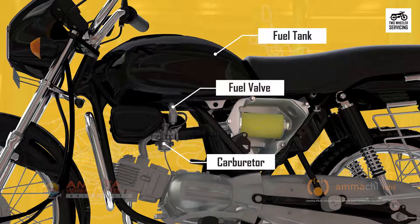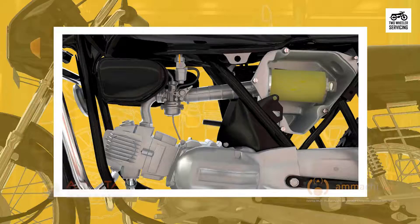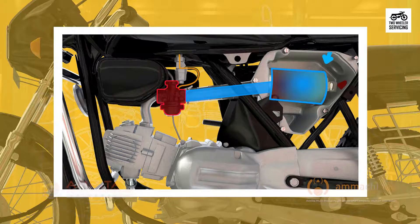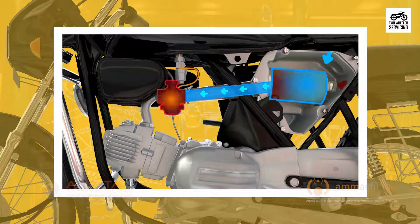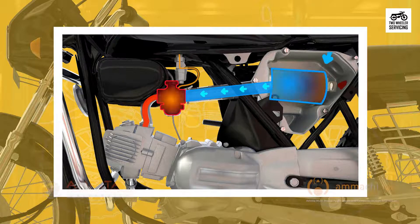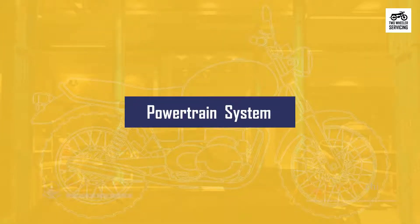The fuel is stored in the fuel tank and the fuel valve is used primarily to turn on or off the flow of fuel from the tank to the carburetor. Filtered air comes from the air filter, which filters the air and sends it to the carburetor. The carburetor prepares the fuel for engine consumption so that it has just the right amount of air mixed with it. The fuel-air mixture then moves into the engine.